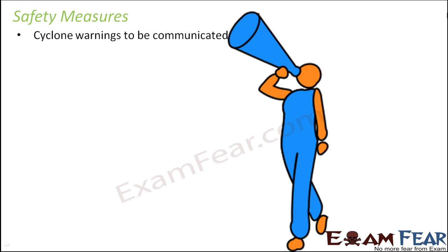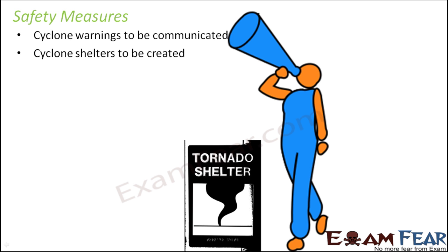One thing that needs to be done is cyclone warnings must be communicated. If we inform everyone beforehand that a cyclone might occur in a particular area, people of that area will remain aware. They will know that something like this might happen, so they should stay safe, prepare themselves, and migrate to a safer place so that minimum harm happens.